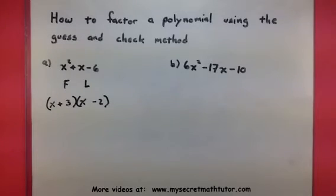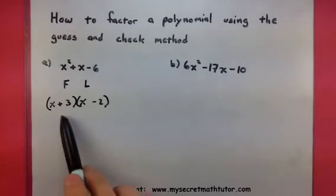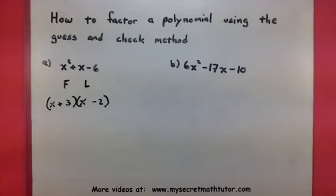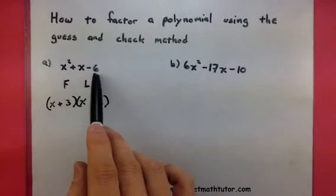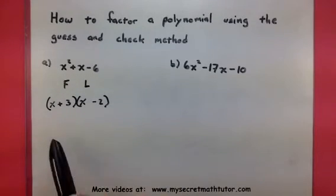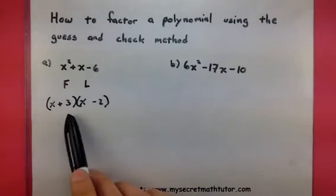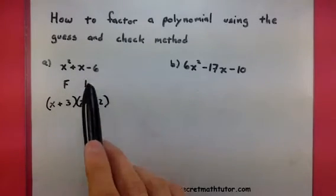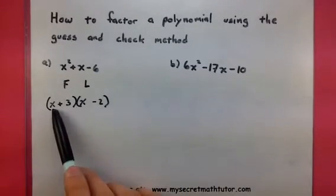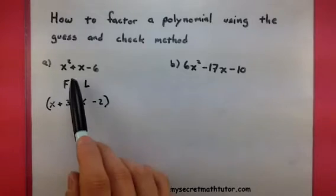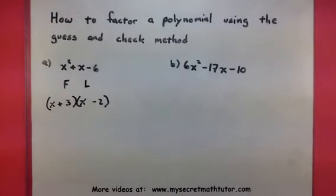Now, here's where the check part comes in. This may not be the right answer. I want to actually carry out the entire FOIL process to make sure it works and actually gets my original polynomial. Well, the way we've built our first and last terms, we know that these guys are going to work. The only concern is, will the outside and inside combine in order to give me my x term?